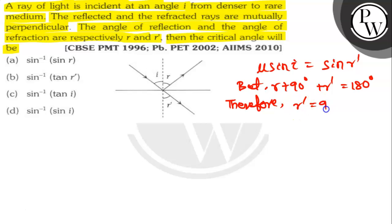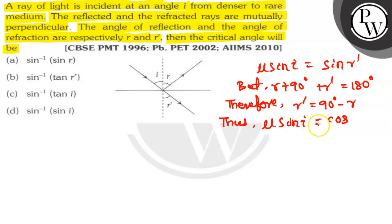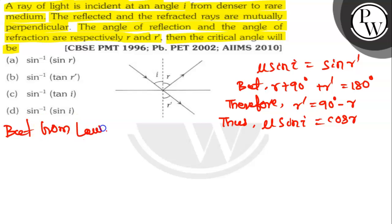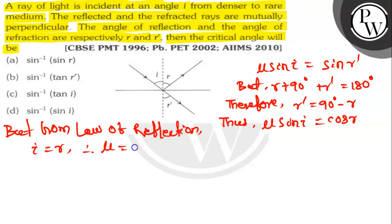R-dense is equal to 90 degrees minus R. Thus, mu sin i is equal to cos R. But from the law of reflection, i is equal to R. Therefore, mu is equal to cos i.